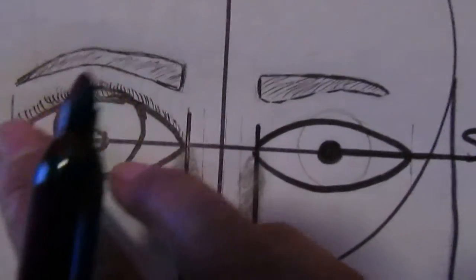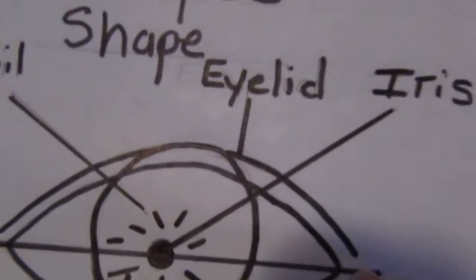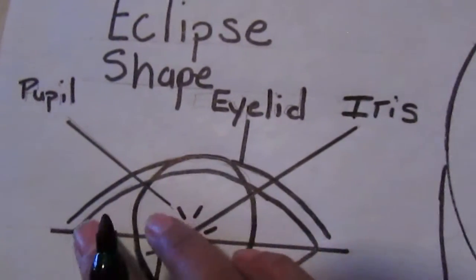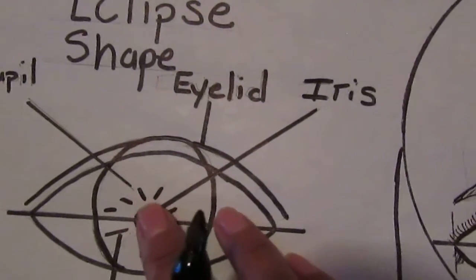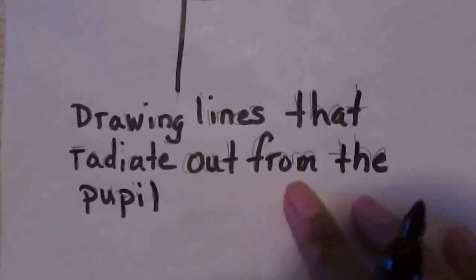Then right above this curved line, you're going to create an eyelid. So you should have your ellipse-shaped eyes, your pupil, your iris which you should shade in. And then this is what Ms. Silva calls drawing the lines that radiate out from the pupil. So basically you're going to create these lines right here.